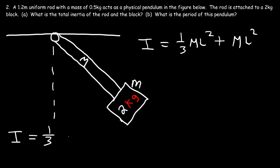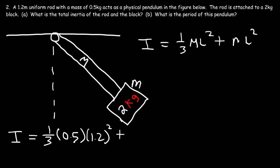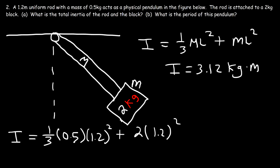So it's 1/3 times the mass of the rod, which is 0.5 kilograms, times the length of 1.2 meters squared, plus the mass of the block, which is 2 kilograms, times the radius of 1.2 meters squared. That gives us a total inertia of 3.12 kg·m².